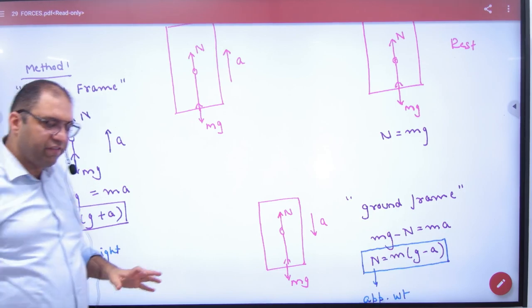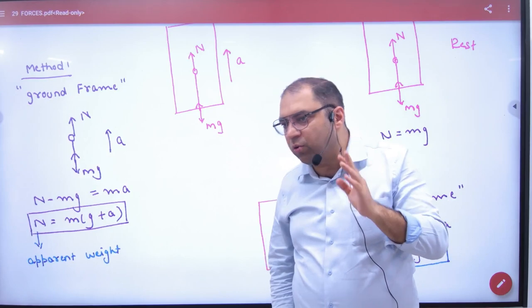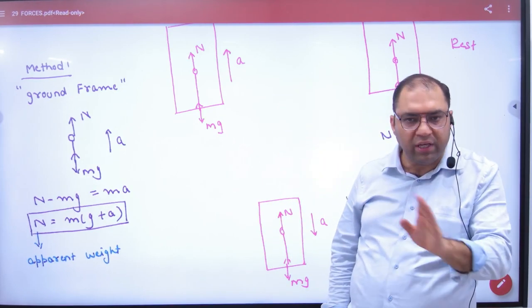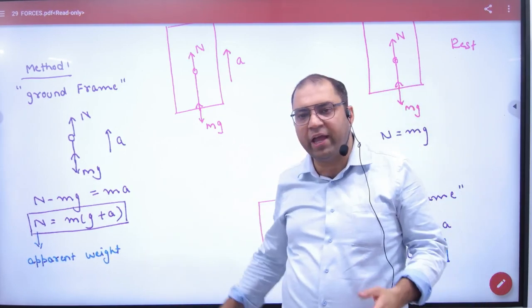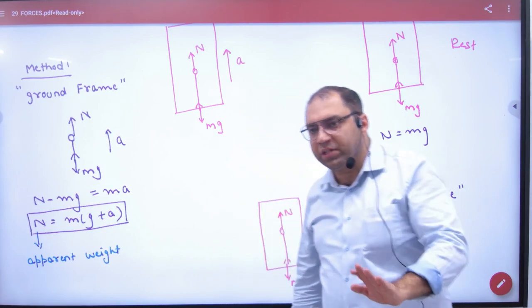This is apparent weight. That means if this man in lift stands on a weighing machine and accelerates upward, it will not be actually Mg. It will be more than normal.